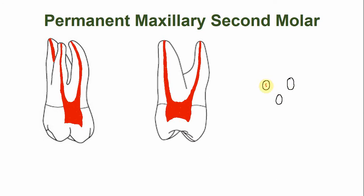In the distal root, the shape of the canal is rounded. This is the palatal root, and the mesial root — the size of the canal is similar to the palatal root and is oval in shape.